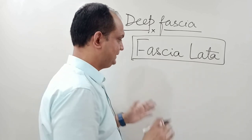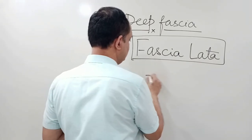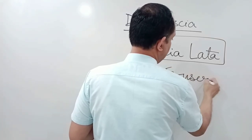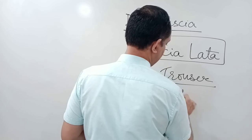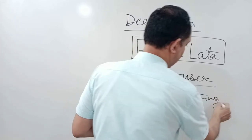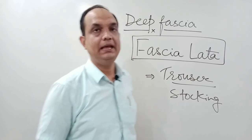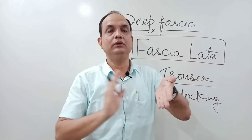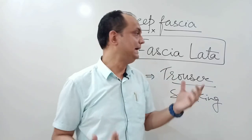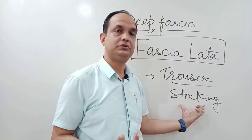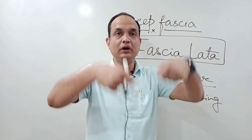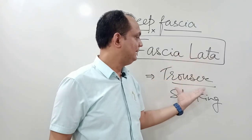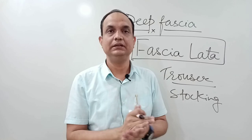Now this fascia of thigh, when you see the thigh, it encloses the thigh like a trouser or you can say it encloses the thigh like a stocking. It means that this thigh is covered anteriorly, posteriorly, medially and laterally — on all four sides — like you have a stocking.